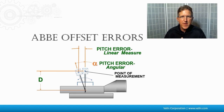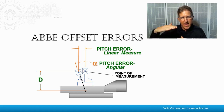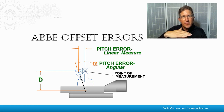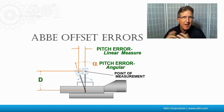As the carriage moves, there may be some Abbe offset errors, which can introduce some angular offset. There's a pitch error and an angular error. So if the carriage actually has some pitch, yaw, and roll as it goes along the movement — because nothing is perfect — that point an inch or two above the carriage is going to have a little bit of Abbe offset error.